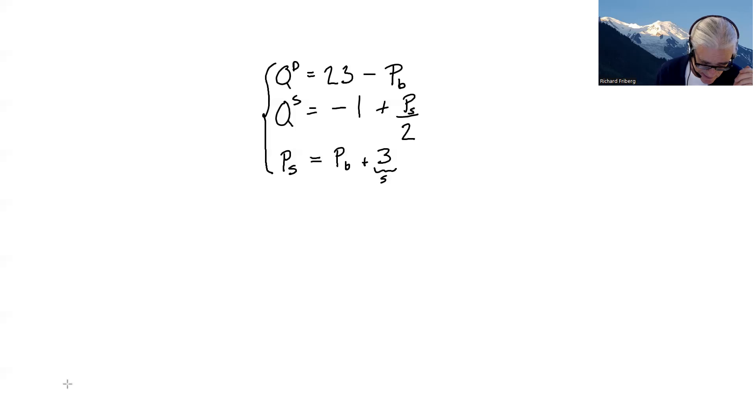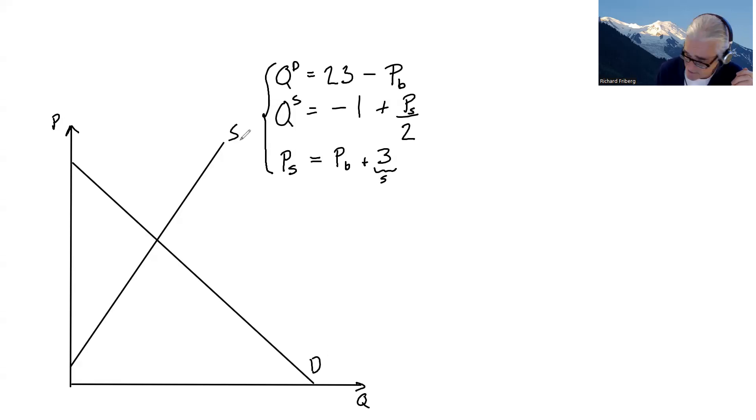We have quantity, we have price. There's a demand curve and there's a supply curve. That's D, S. We know from previous that if there's no tax or subsidy, no other distortions, the equilibrium price is 16 and the equilibrium quantity is 7.